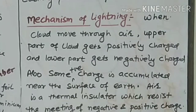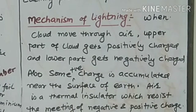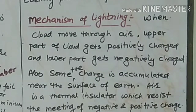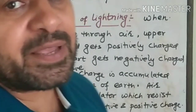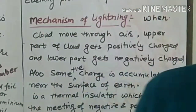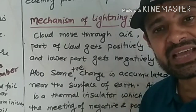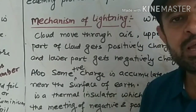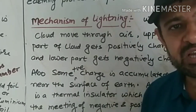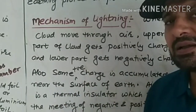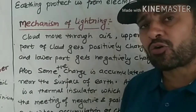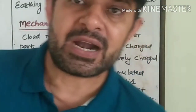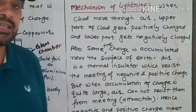The upper part of the cloud gets positively charged and the lower part of the cloud gets negatively charged. This has not been fully confirmed, but the lower part of the cloud carries negative charge.